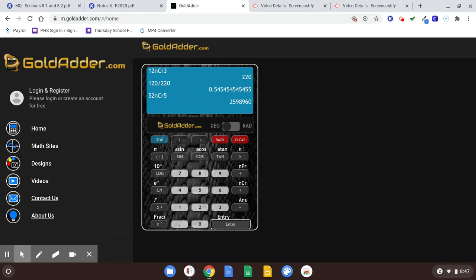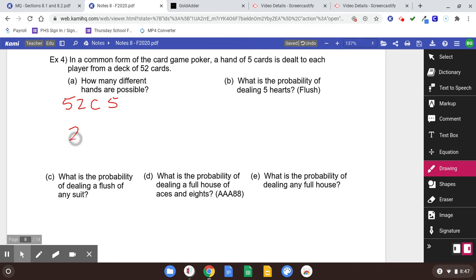So that's 52 choose 5. Now I want to tell you, that number comes up a lot. So much, 52 choose 5 does, that you might end up memorizing this number right here. 2,598,960. It just comes up kind of a lot.